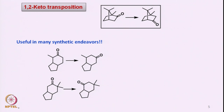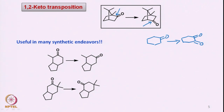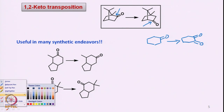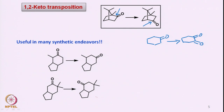Now let us go to another topic today: 1,2-keto transposition. What we discussed earlier using selenium dioxide was conversion of a ketone to a diketone. However, another requirement that occurs in many synthetic transformations is how are we going to convert a ketone which is already present at one position to the next position. This is something very important, because in many transformations what is required is conversion of one keto position to the next keto position.